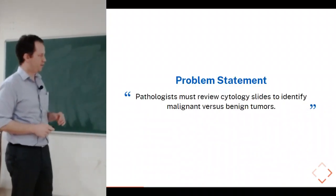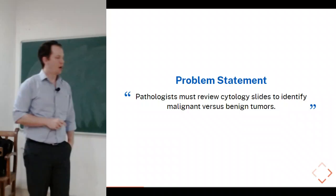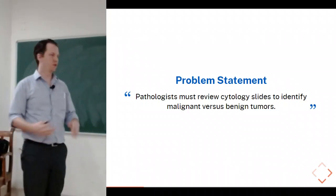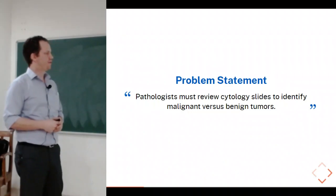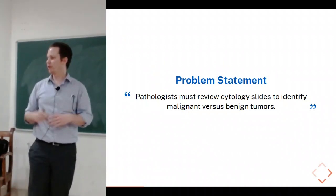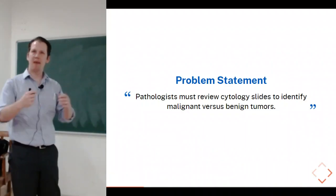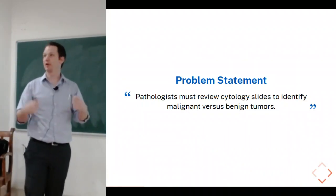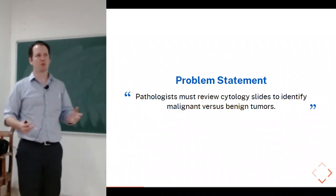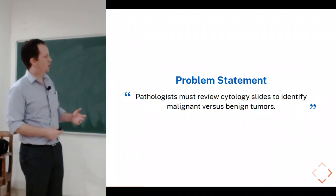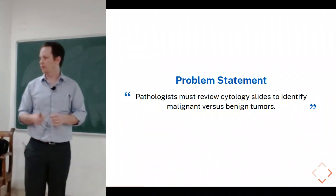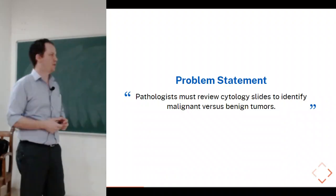Here's an example of a good problem statement: a pathologist has to review slides of cytology — images of cells — to identify whether a tumor is malignant or benign. This is a problem because manual review of slides is very tedious and time-consuming. Most pathologists are overworked, and there are many parts of the world without pathologists. The ability to make pathologists more efficient is very valuable, so this is something we're interested in.